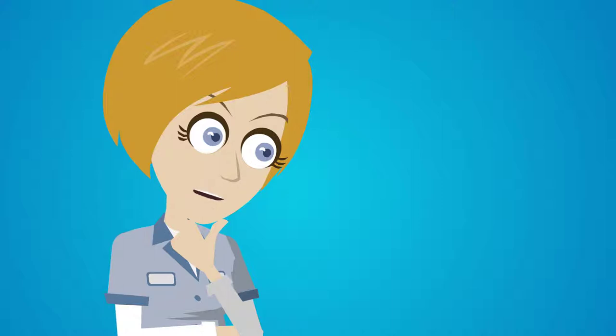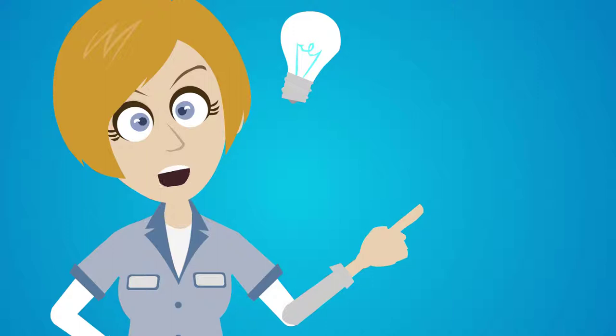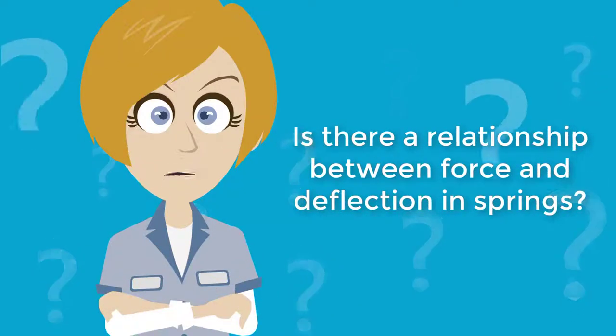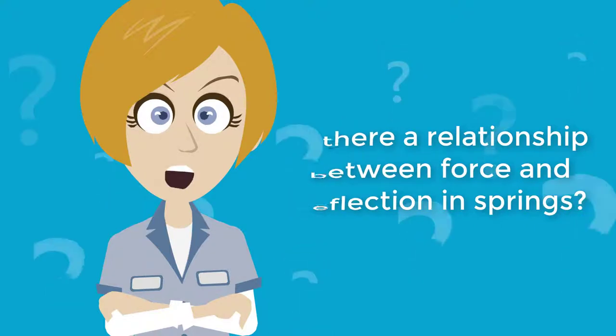If so many objects rely on springs to function correctly, there must be a relationship that engineers can use to design them. Is there a relationship between the force exerted on a spring and how much it deforms? And what would that even look like?